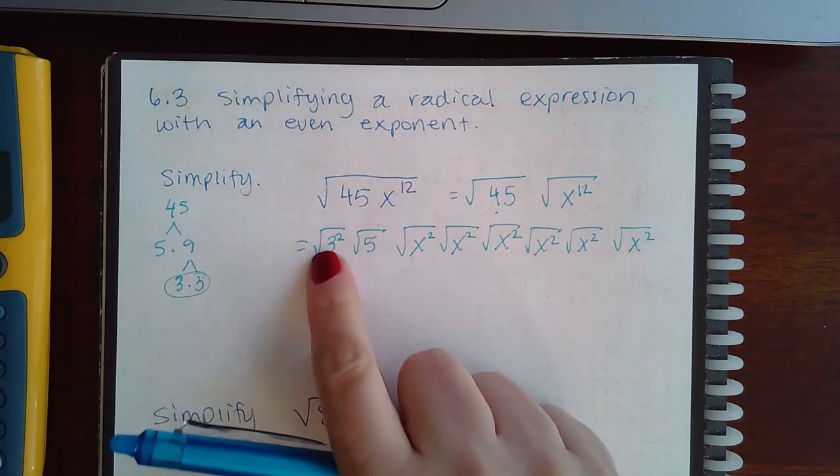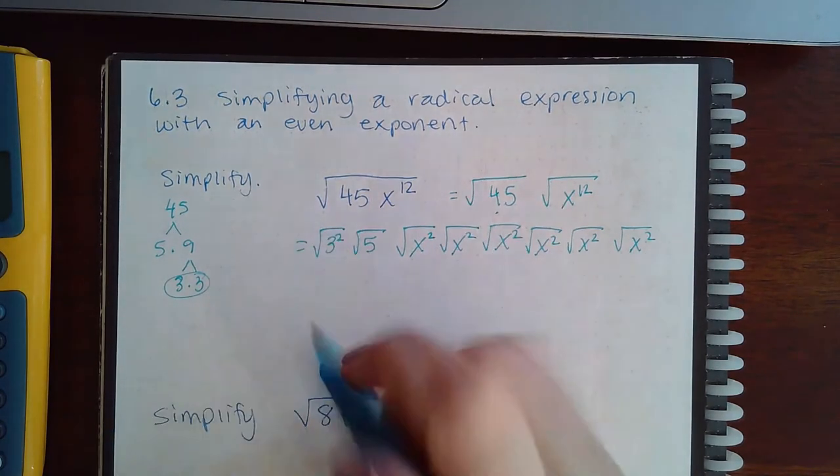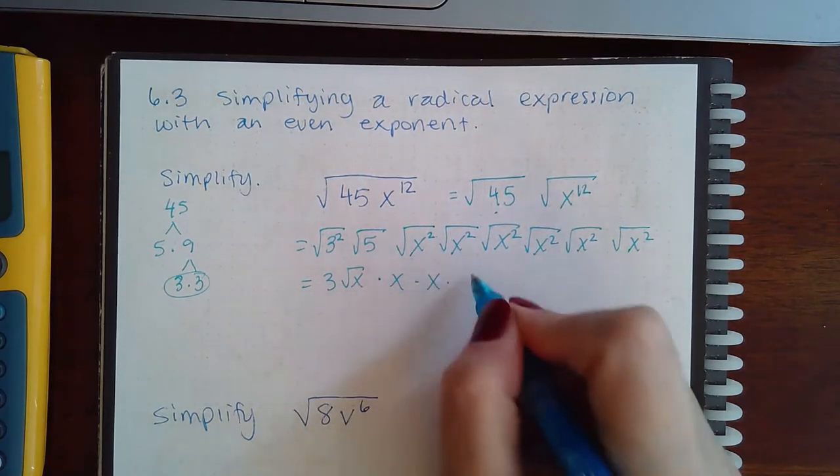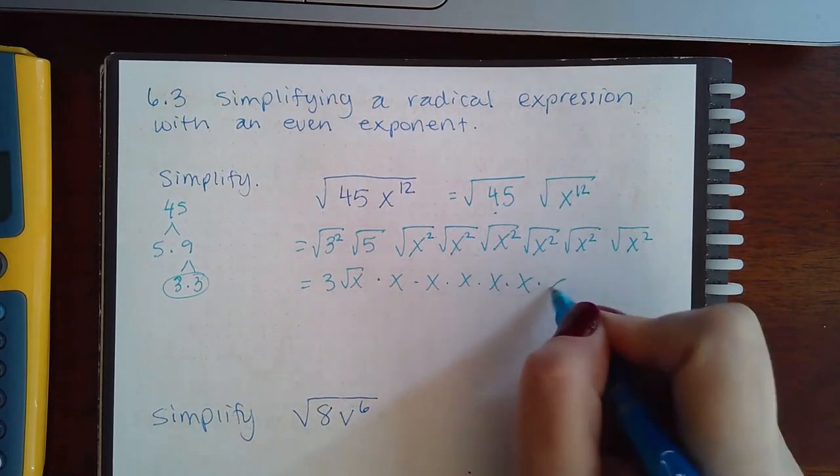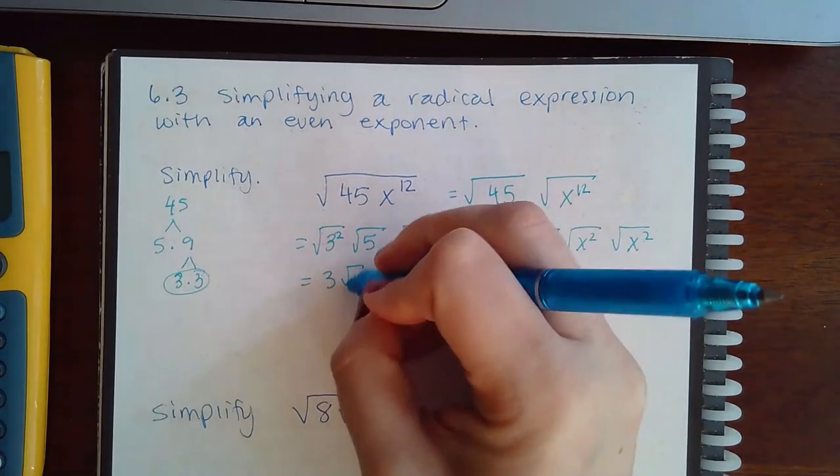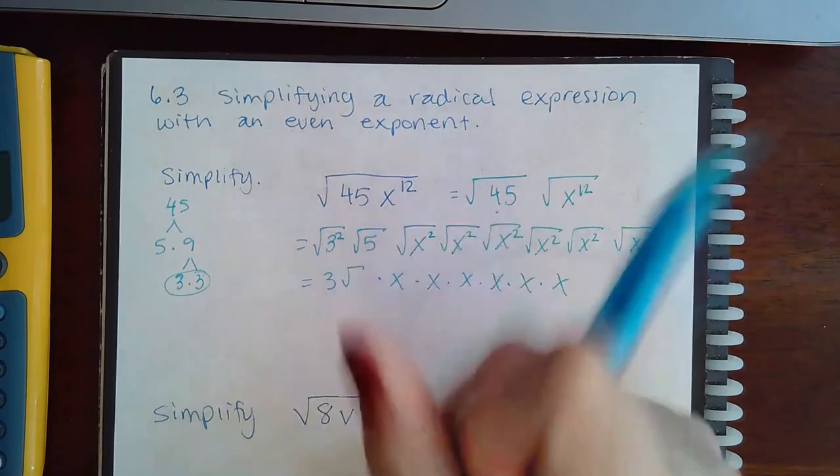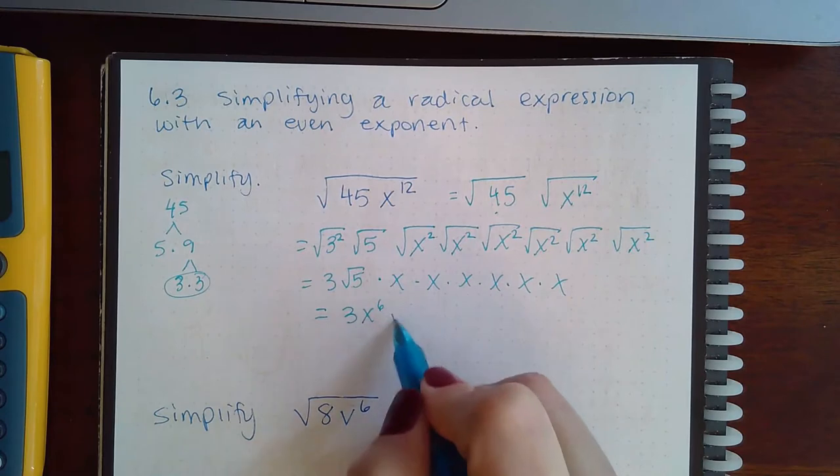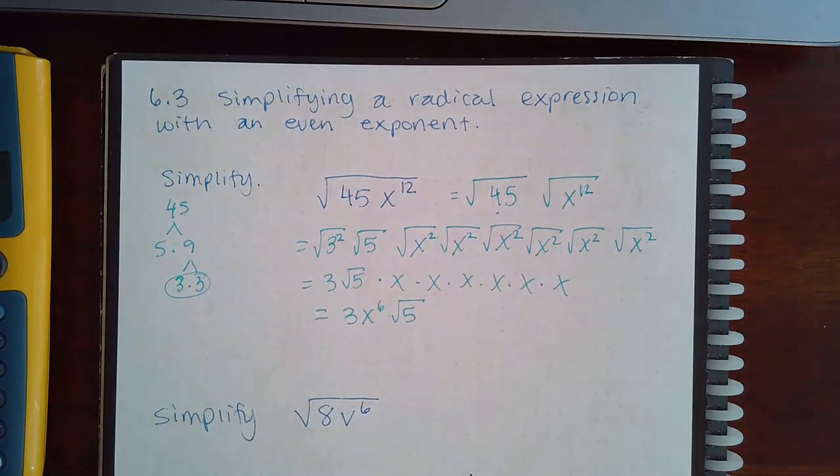Now when I do that, the power and the root cancel, they cancel, cancel, cancel, cancel, cancel. So if I—oops, I wrote the wrong thing there, that should have been a 5—if I multiply this all together I get 3x to the 6 and the square root of 5.